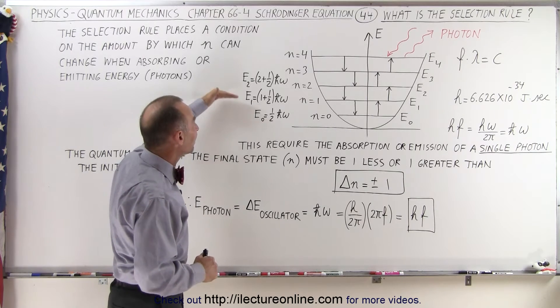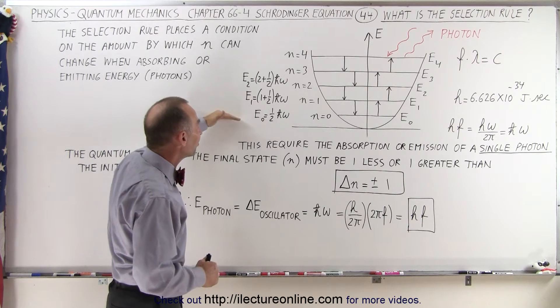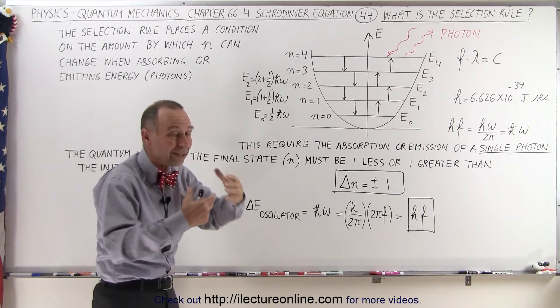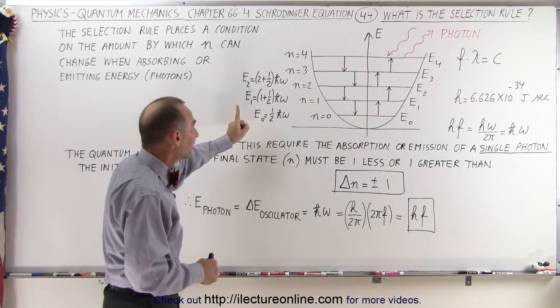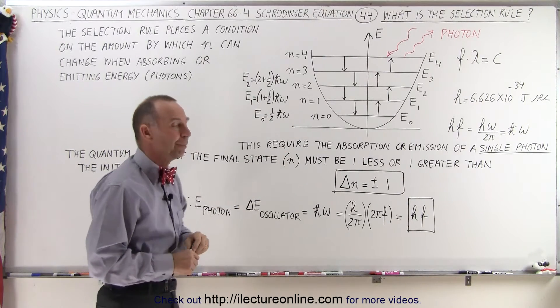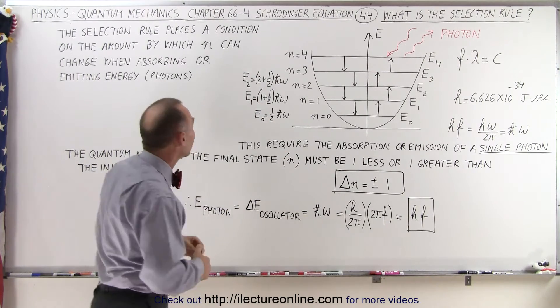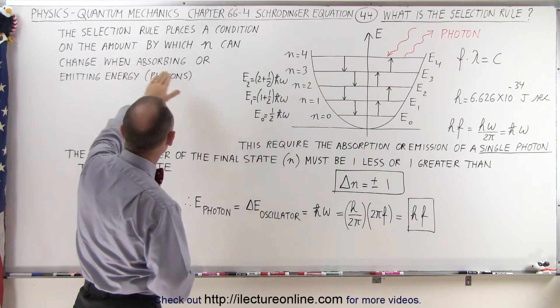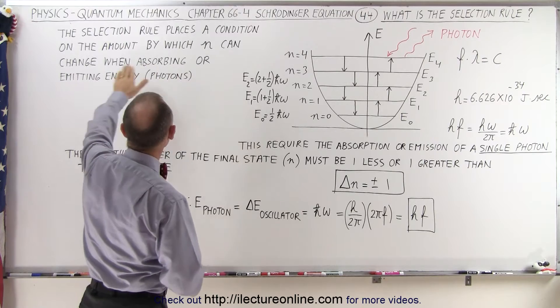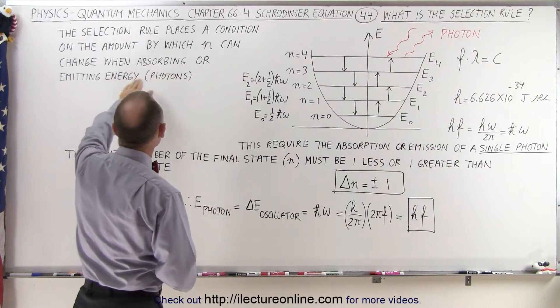The difference in the energy level from one quantum mechanical state to the next quantum mechanical state is equal to exactly ℏω. So, what does the rule say? The rule places a condition on the amount by which n can change when absorbing or emitting energy.